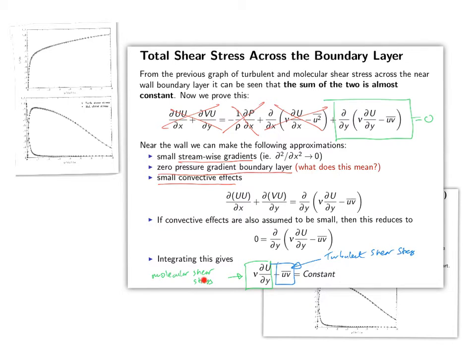And what we're saying is that there's a point at which the sum of the molecular shear stress and the turbulent shear stress is going to be constant. And we're going to look at that by analyzing the variation of these two quantities near to the wall.